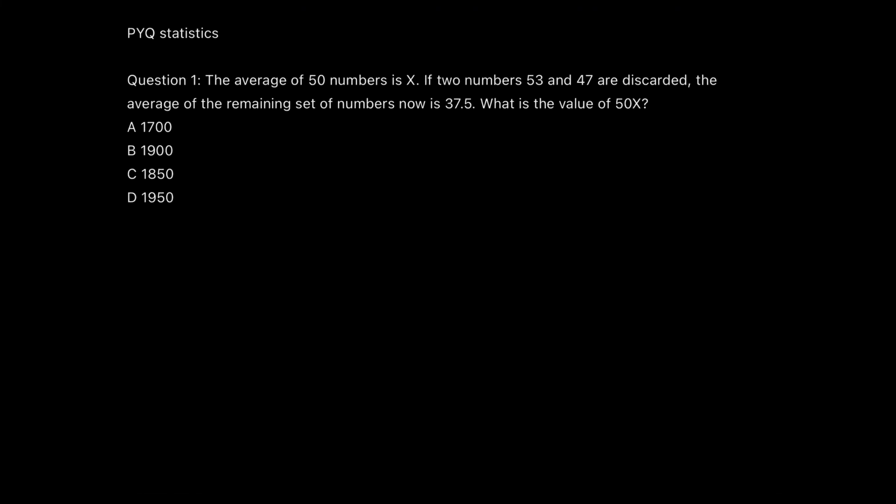Now on the basis of this, I'll do two past year questions and the concept will be clear for you. The first question is an average based question. Average of 50 numbers is x. So what will be the sum? I am pretty sure you know this. Sum will be the number of items multiplied with the average, that is 50x. But here they are saying that they discard 53 and 47. That means two numbers are discarded. What is the sum of the two numbers? 53 plus 47 is 100.